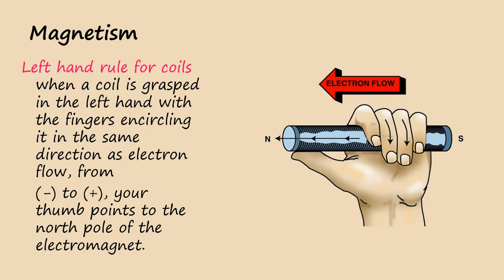In the left-hand rule for coils, when a coil is grasped in the left hand with the fingers encircling it in the same direction as the electron flow, from negative to positive, your thumb points to the north pole of the electromagnet.